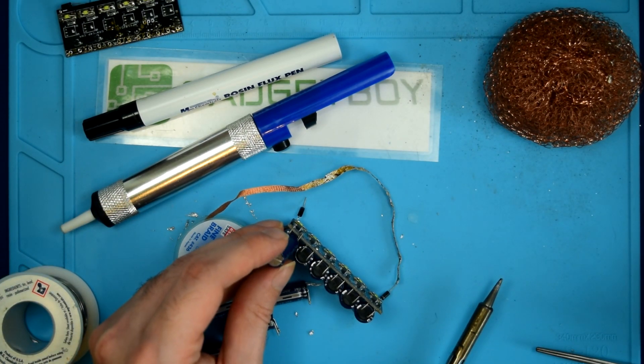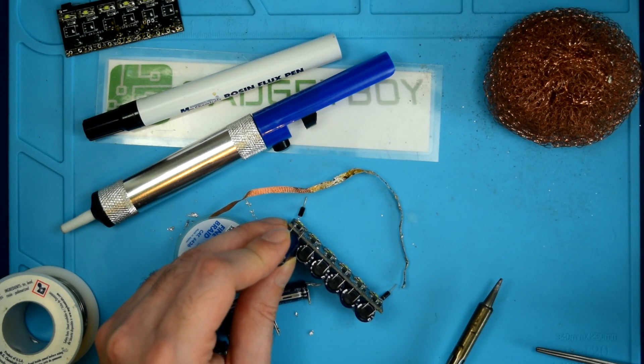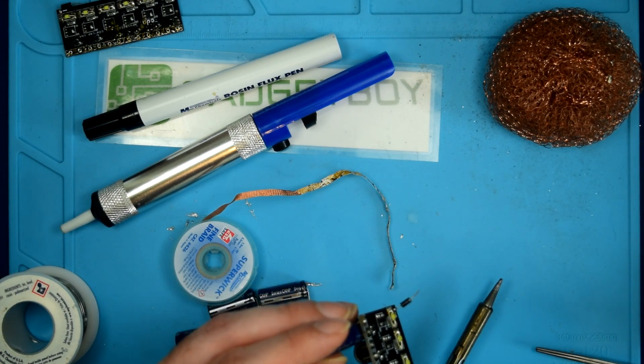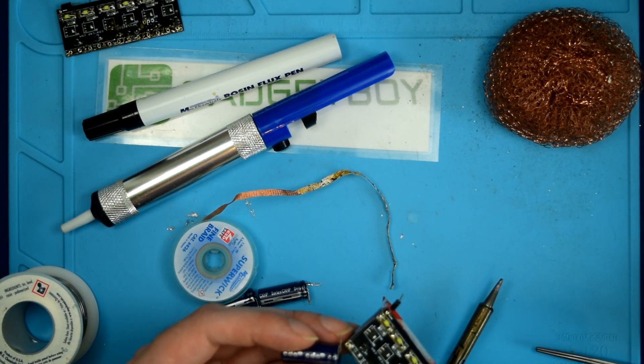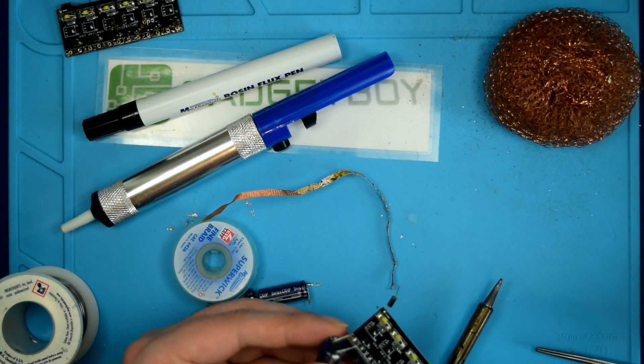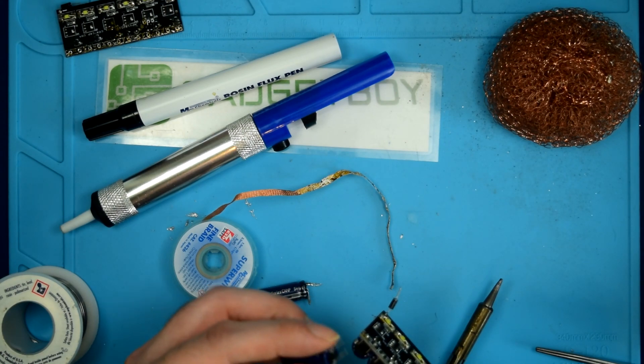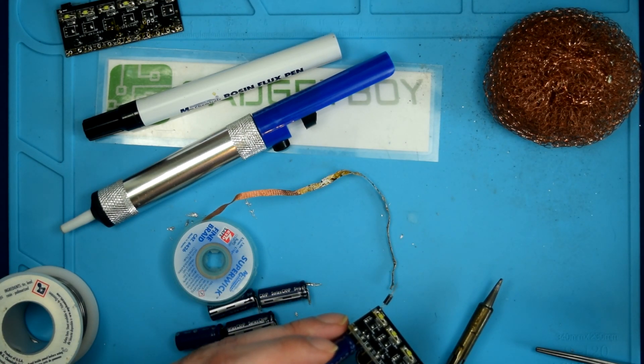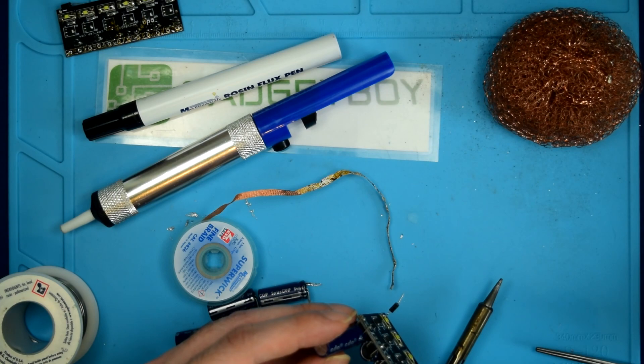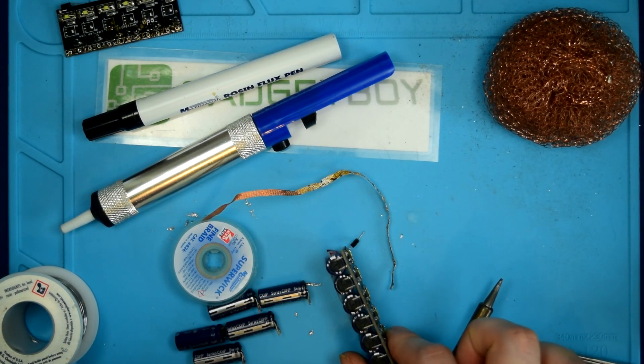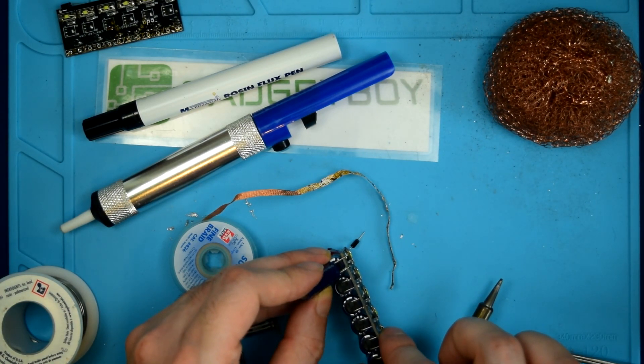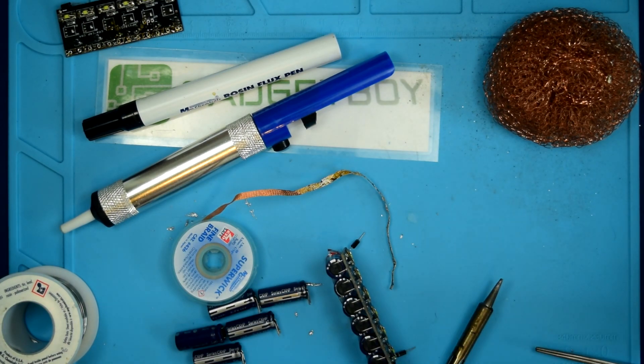And now my goal is to solder them into place sort of like this. So what I'm going to have to do is... How exactly do I want to go about this? Well, I can't do that because I already bent the leads around. So I need to do it like this.